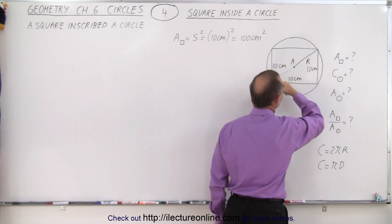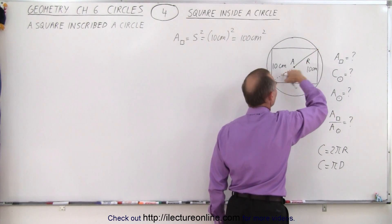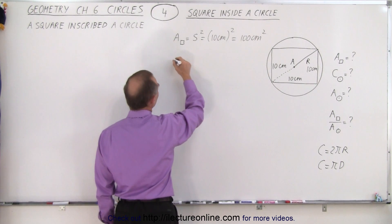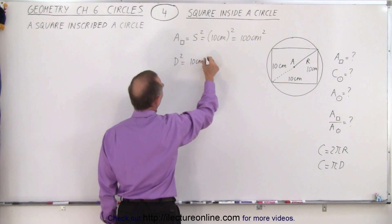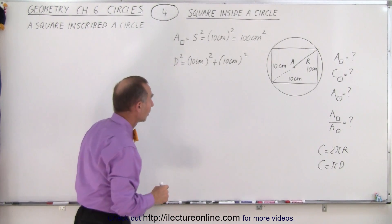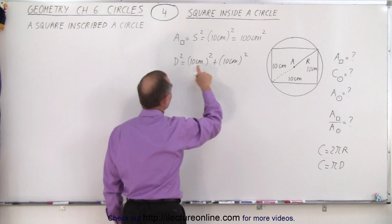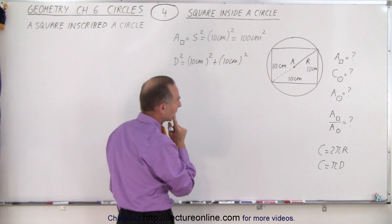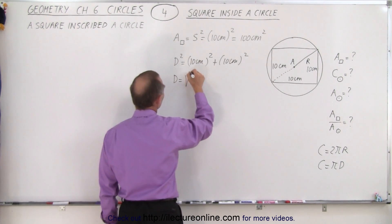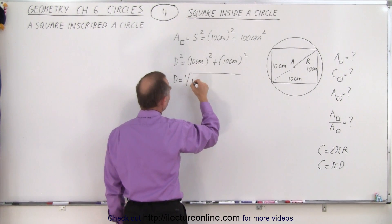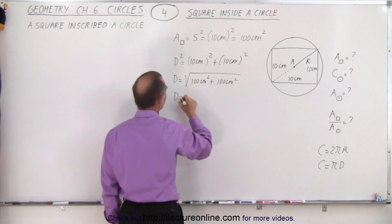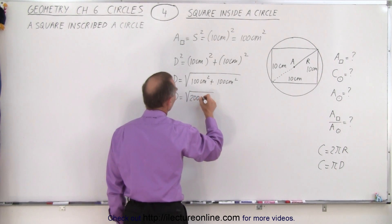How do we find the diameter? This side is also 10 centimeters, so we have a triangle where the hypotenuse is the diameter and the two sides are each 10 centimeters. We can say that the diameter squared is equal to 10 centimeters squared plus 10 centimeters squared — that is the Pythagorean theorem. The sum of the squares of the two sides equals the square of the hypotenuse. Solving for the diameter: the diameter equals the square root of 100 plus 100, which is the square root of 200 centimeters squared.